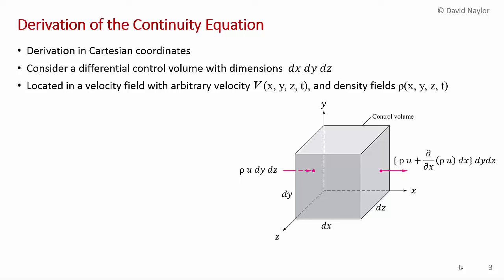I'm going to start with the derivation of the continuity equation in Cartesian coordinates. As shown in the diagram, we're going to consider a differential control volume with dimensions dx, dy, dz. This control volume is assumed to be located in an arbitrary velocity vector field V of x, y, z, and time. Density also can vary with x, y, z, and time. So at this point, we're not making any simplifications — the flow could be fully three-dimensional, unsteady, and compressible.